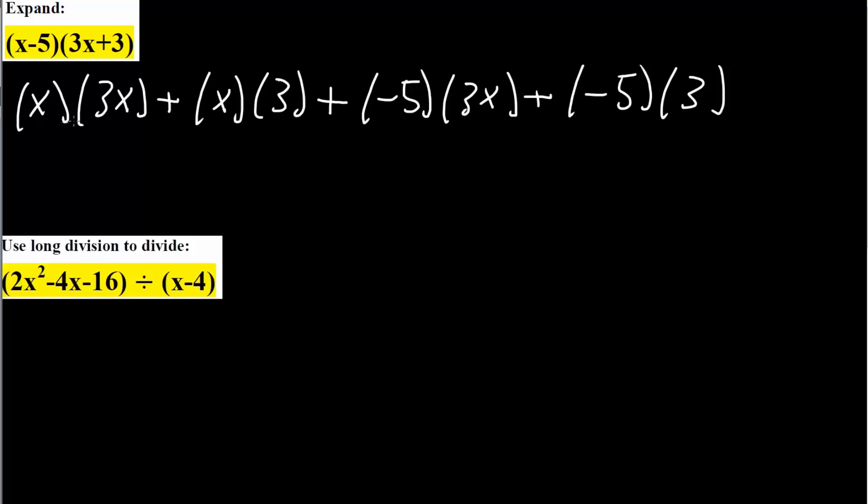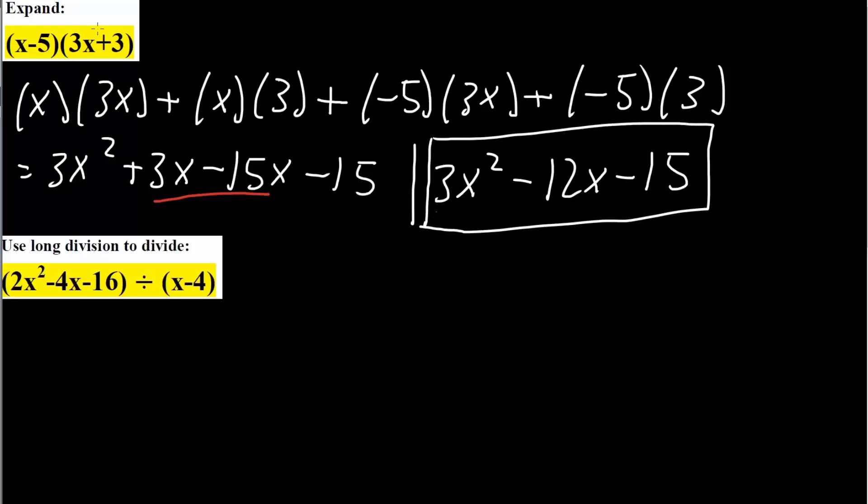So then we multiply. So we get, this would become 3x squared. This would get plus 3x. And here we get minus 15x. And here we get negative 15. And now we group. There's not much grouping involved in this problem. The only thing we can group is 3x and minus 15x. And so our final answer will be 3x squared minus 12x minus 15 like this. And we can simply box in our answer. And that's all we need to do for this expanding.